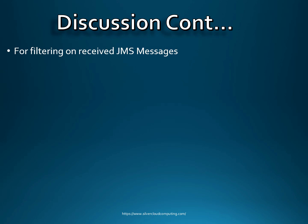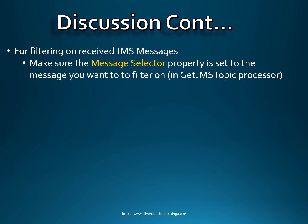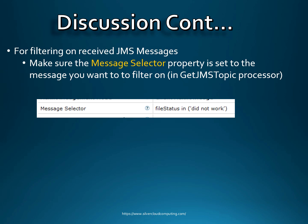On the client side for receiving JMS messages, you want to make sure that the message selector property is set to the message you want to filter on. If you want to filter on a certain type of message property — for example, file status equal to 'did not work' — on the JMS receive side, assuming this is all NiFi on both the transmit and receive side, you would set the message selector to 'file status = did not work'. That's the semantics of how you can filter on messages into NiFi from the JMS server. We would only receive messages if the file status said 'did not work'.